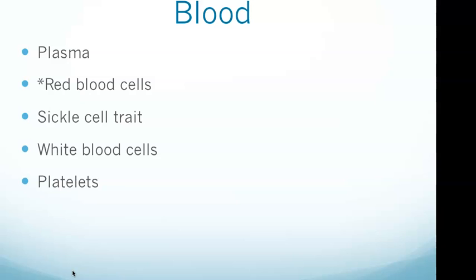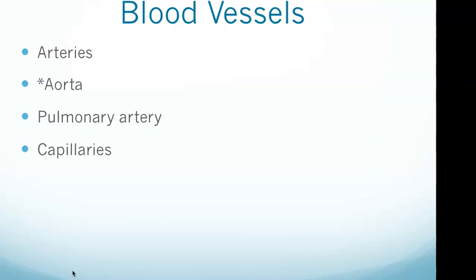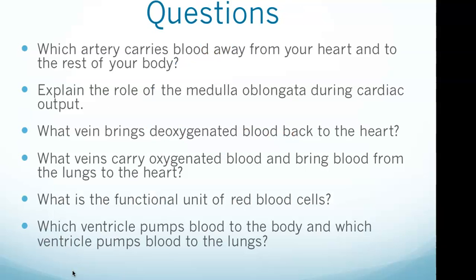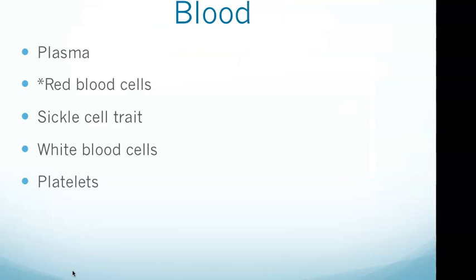Anemia occurs when hemoglobin levels are too low. The functional unit of red blood cells is hemoglobin — that's question five. Sickle cell trait involves red blood cells that are irregularly shaped. White blood cells are part of the body's immune response and remove pathogens from the blood. Lymphocytes, a type of white blood cell, release antibodies in response to disease and enable other immune system responses.